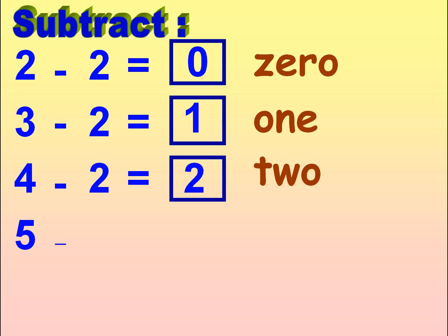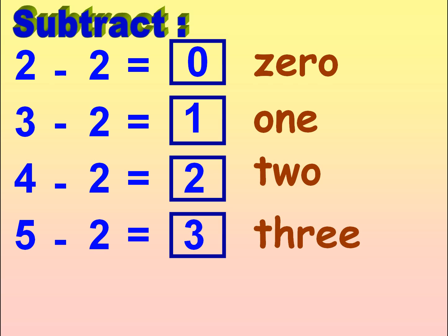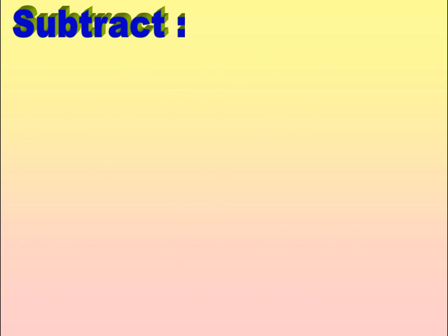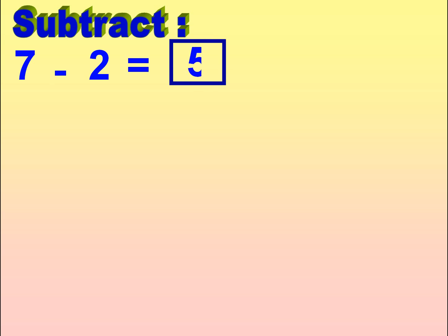5 minus 2 is equal to 3. T-H-R-E-E, 3. 6 minus 2 is equal to 4. F-O-U-R, 4. 7 minus 2 is equal to 5. F-I-V-E, 5.